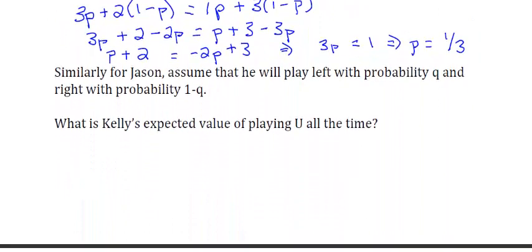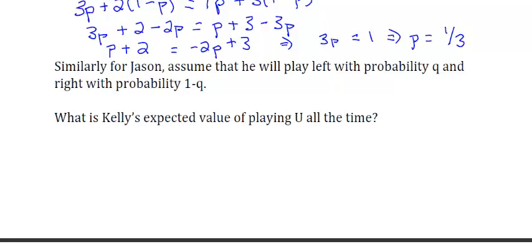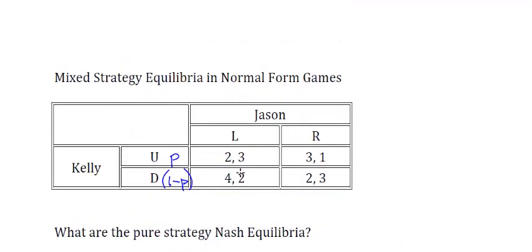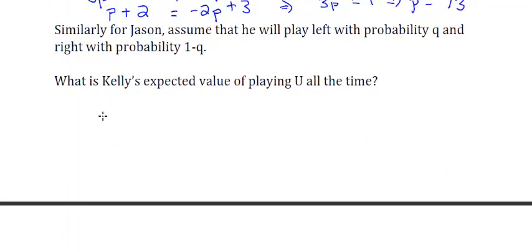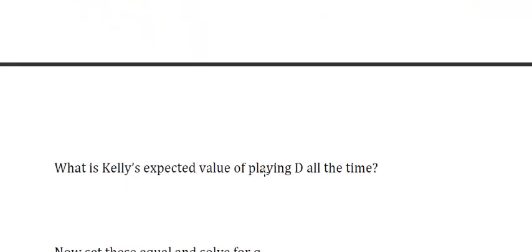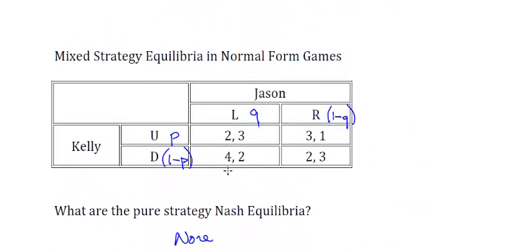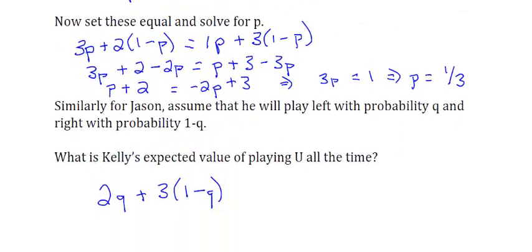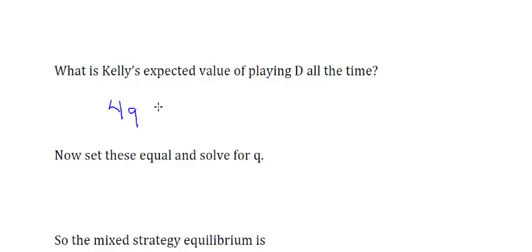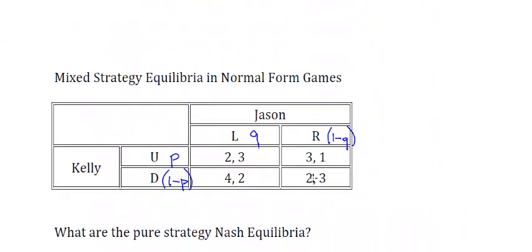Now we do exactly the same for Jason. We assume he plays left with probability Q and right with probability 1 minus Q, and we ask: what is Kelly's expected value of playing up all the time? That's 2 times Q plus 3 times (1 minus Q). Next, Kelly's expected value of playing down all the time is 4 times Q plus 2 times (1 minus Q).